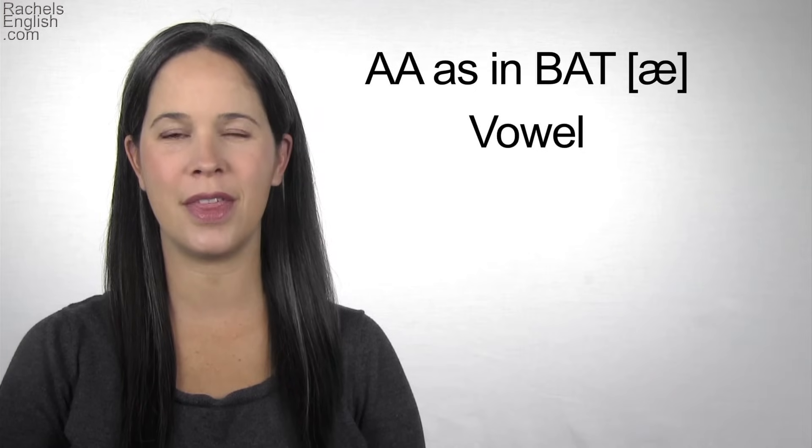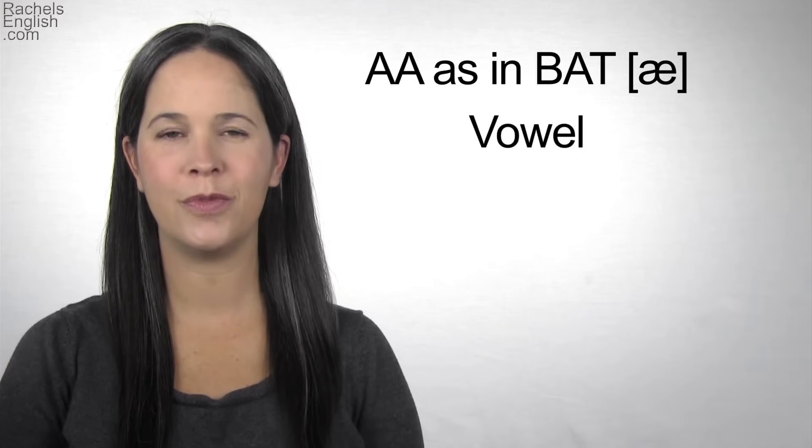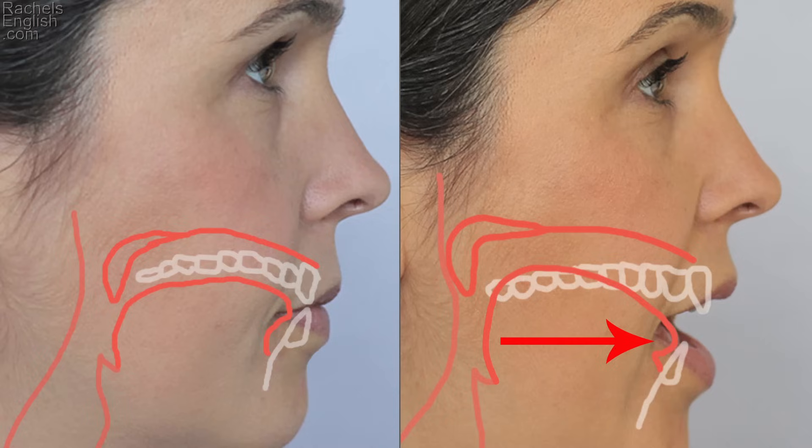We'll go over both in this video. To make the pure AA vowel, the jaw drops quite a bit. The tip of the tongue stays forward, it's touching the back of the bottom front teeth. The back part of the tongue stretches up. The tongue is wide.